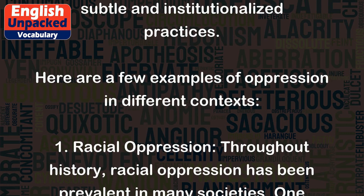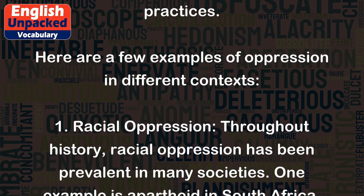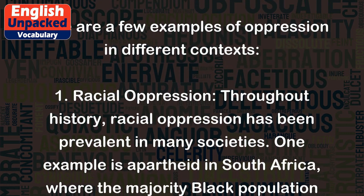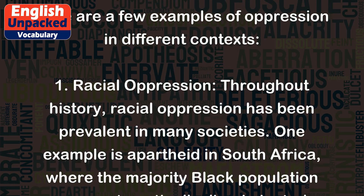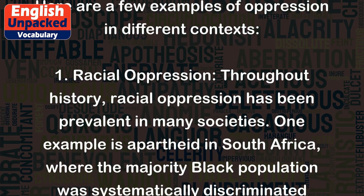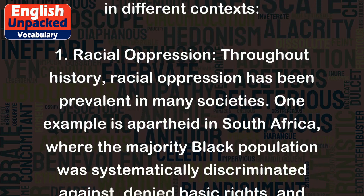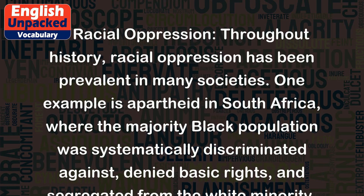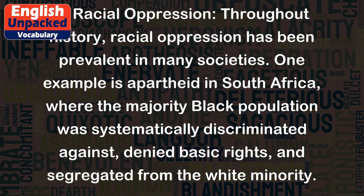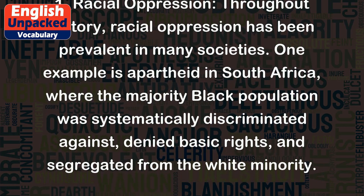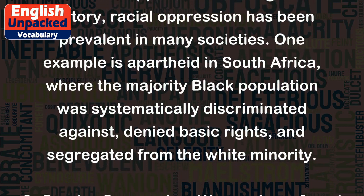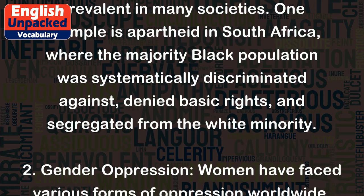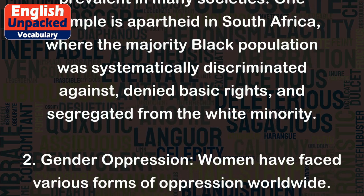1. Racial oppression. Throughout history, racial oppression has been prevalent in many societies. One example is apartheid in South Africa, where the majority black population was systematically discriminated against, denied basic rights, and segregated from the white minority.